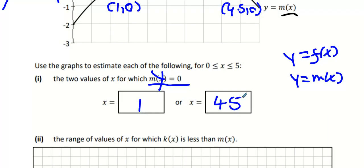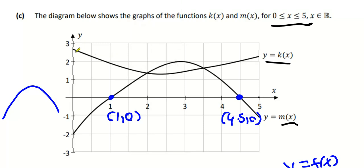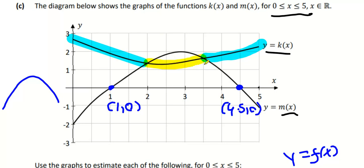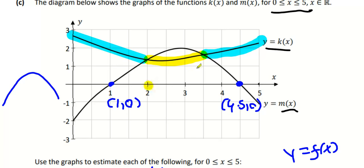Find the range of values for which k(x) is less than m(x) — in other words, when is one graph above the other? K is above m in the blue region. We actually want where k is smaller than m, which is the yellow region in between x equals 2 and x equals 3.5.